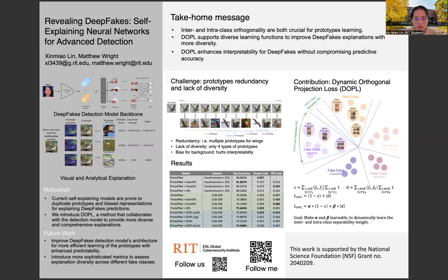Our current self-explaining models, while promising, face significant challenges. They often produce redundant prototypes, meaning they repeatedly focus on the same features and show biased representations in their explanations. This limits their effectiveness and trustworthiness in deepfake detection. I'll introduce our novel approach called DOPL, Dynamic Orthogonal Projection Loss, which addresses these limitations by enhancing the diversity and comprehensiveness of model explanations while maintaining high detection accuracy.